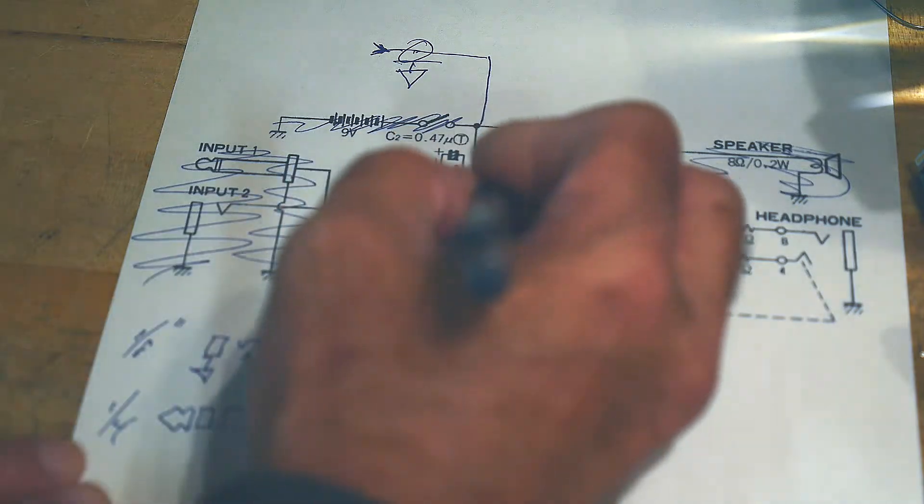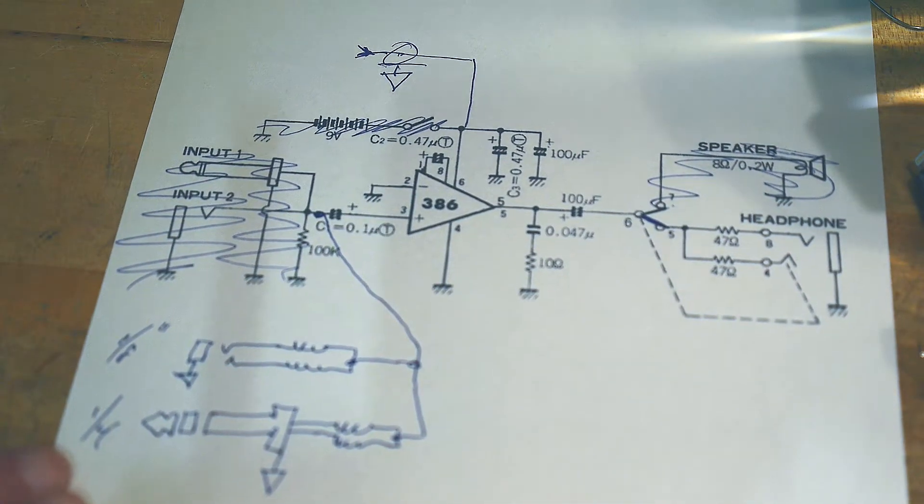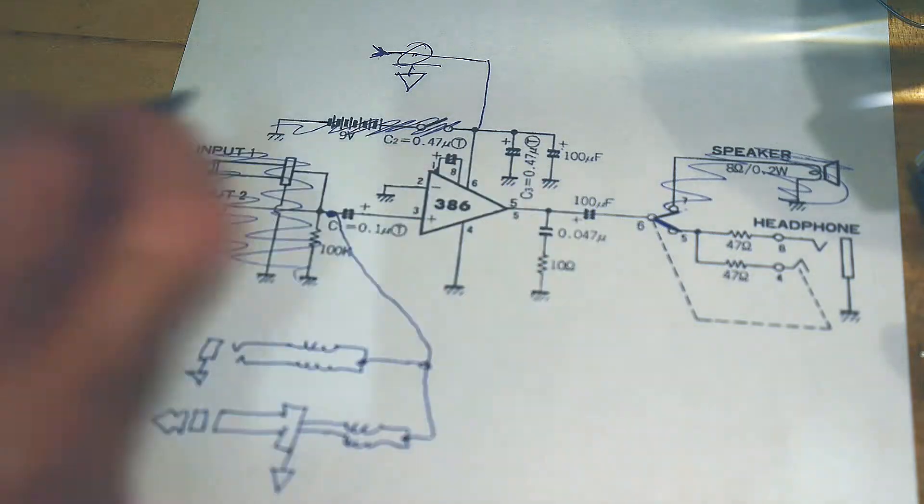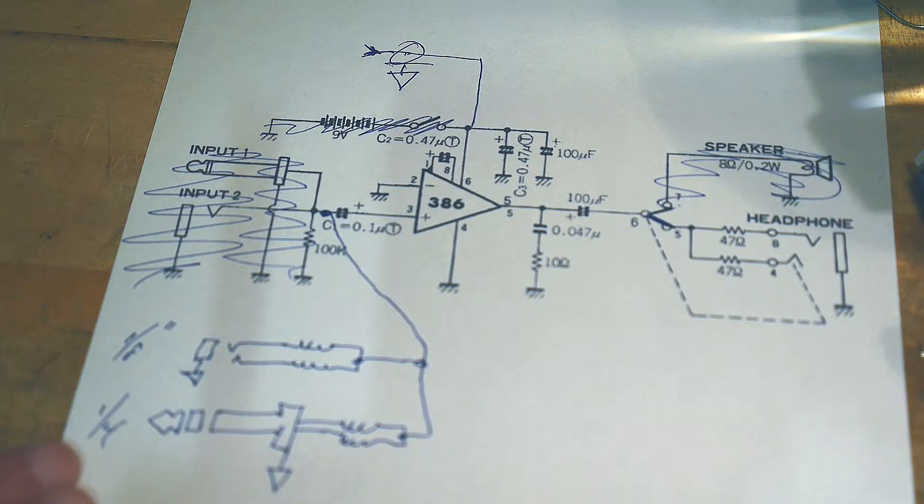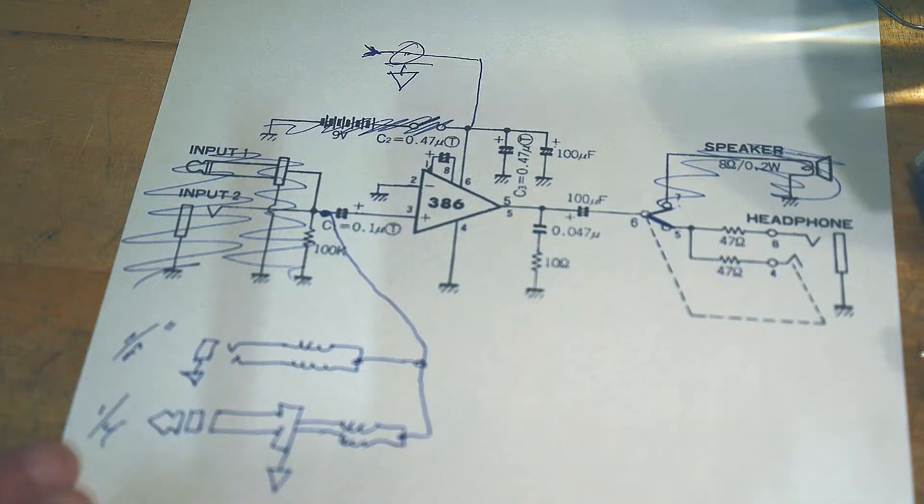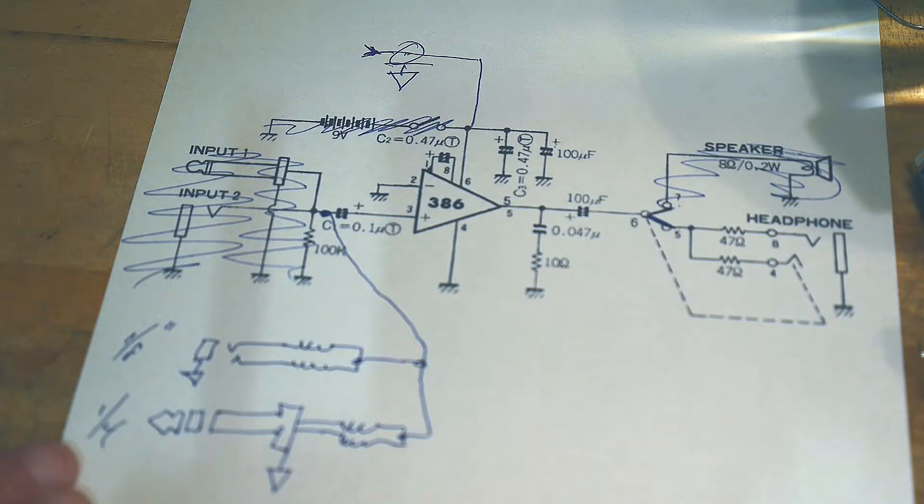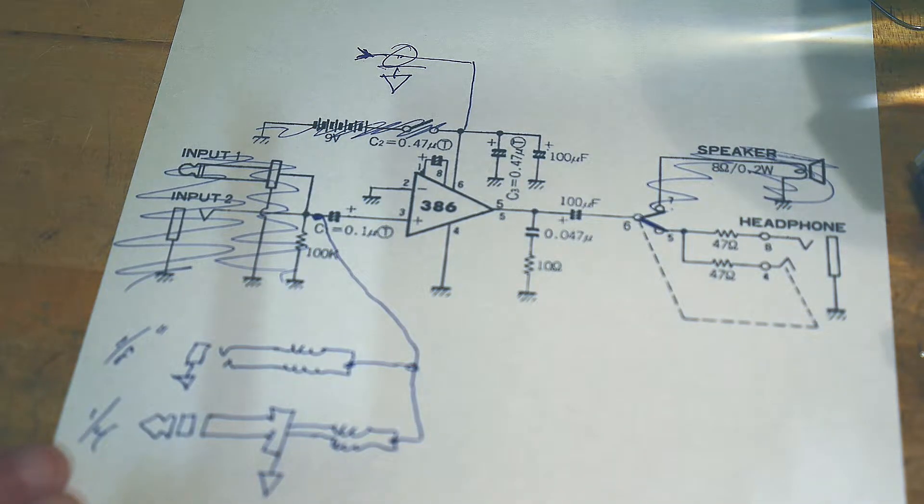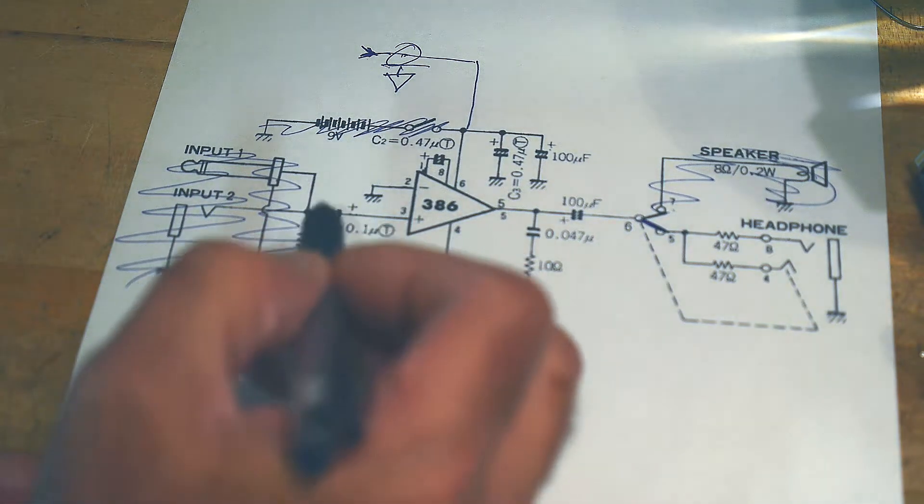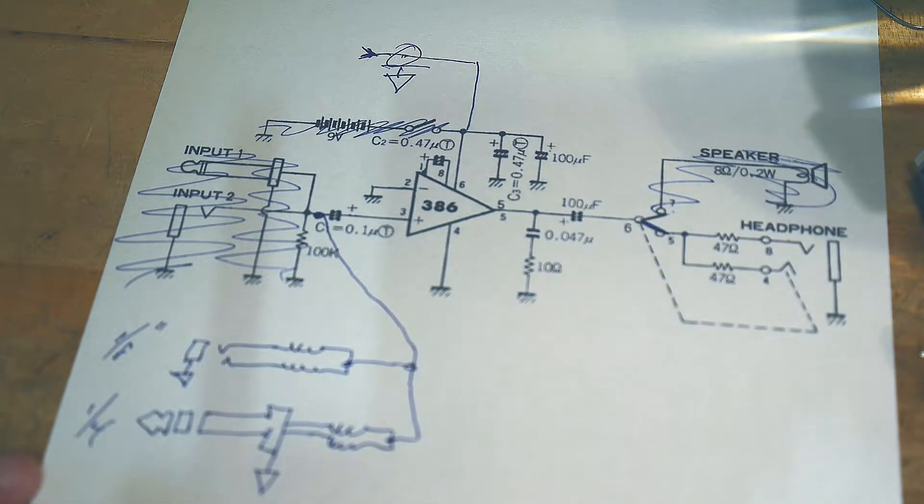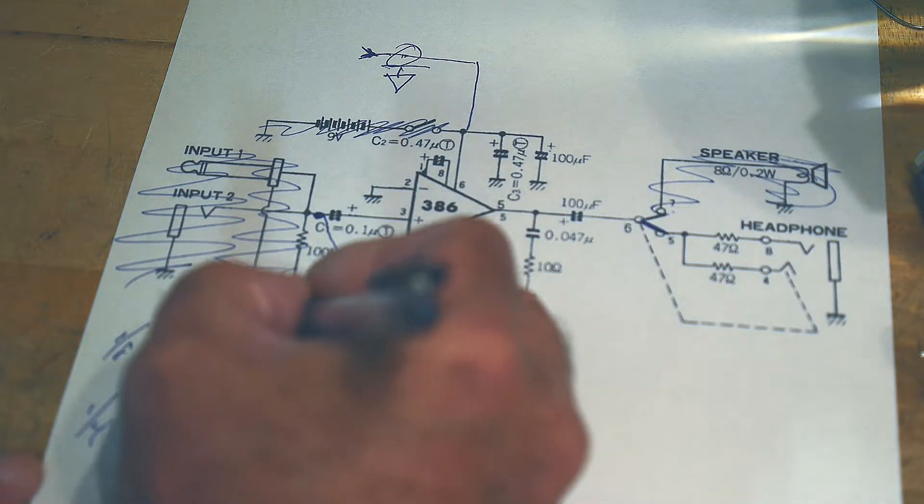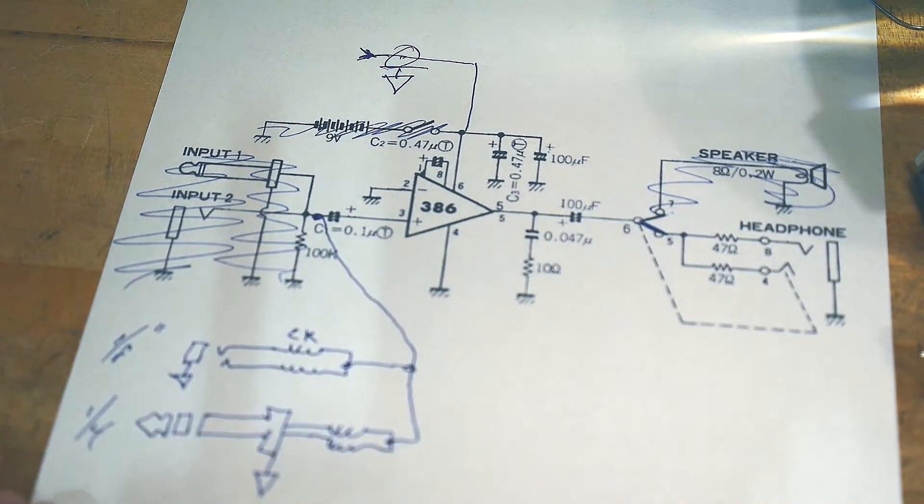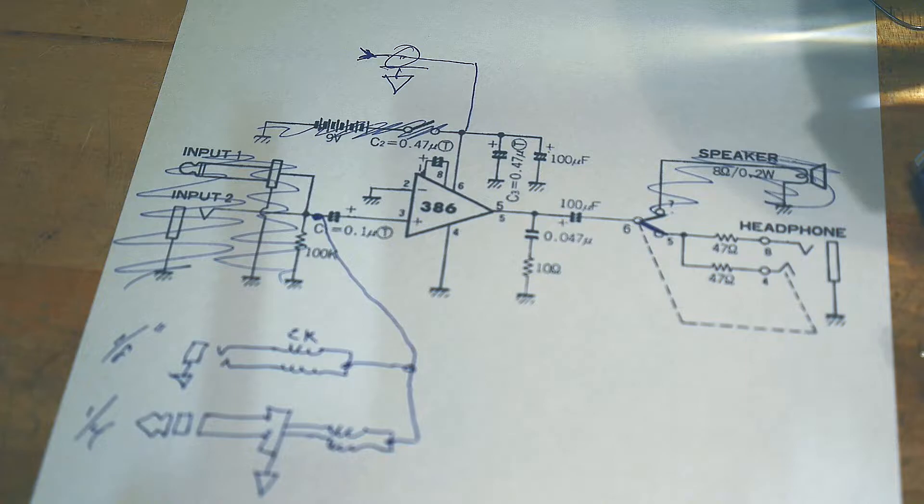The input impedance to the 386 is about 50k, so quite high impedance. It's a dual input plus-minus, and the minus input is just grounded. It's high impedance already, so these resistors are only needed to protect each other. I'll make all four resistors 2k.